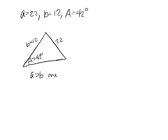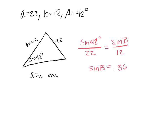I can go ahead and just use the law of sines. We have sine of 42 degrees over 22 equals sine of B over 12. So I compute the sine of 42 degrees times 12 divided by 22, and I get that the sine of B is equal to 0.36. If I do the inverse sine of that answer, I get B is 21.4 degrees.